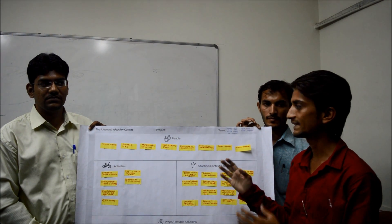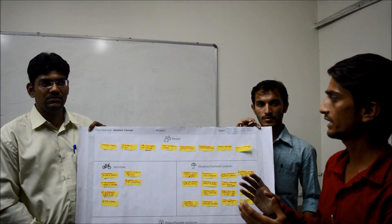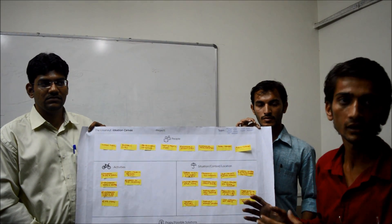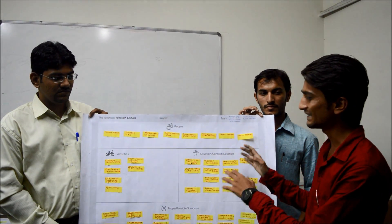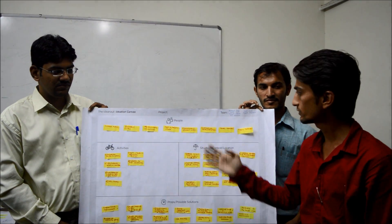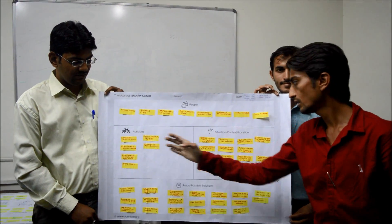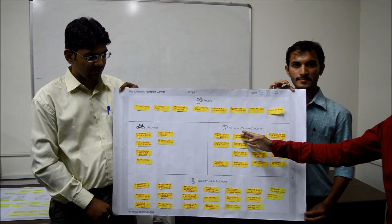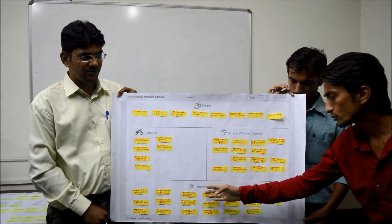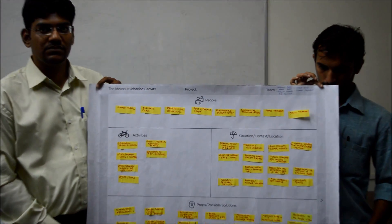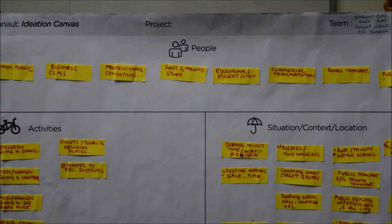This is the second canvas. The first canvas is the user canvas. This canvas is called the ideation canvas. In the ideation canvas, there are four basic parts: first is people, second is activity, third is situation, context and location, and the last one is the possible solution relevant to our problem.